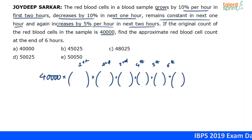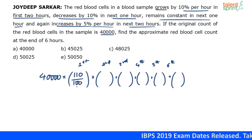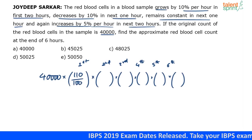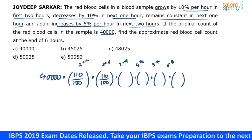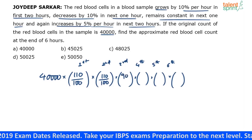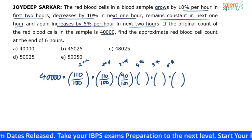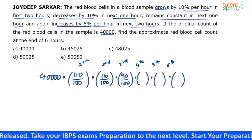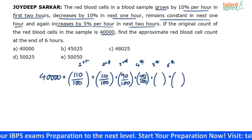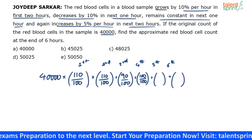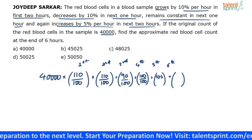In the first two hours it grows by 10% per hour, so in the first hour it becomes 110/100, and in the second hour also 110/100. In the third hour it decreases by 10%, so it becomes 90/100. It remains constant in the fourth hour — 100/100, no change. In the fifth and sixth hours it increases by 5% per hour, so it becomes 105/100 each of those two hours.